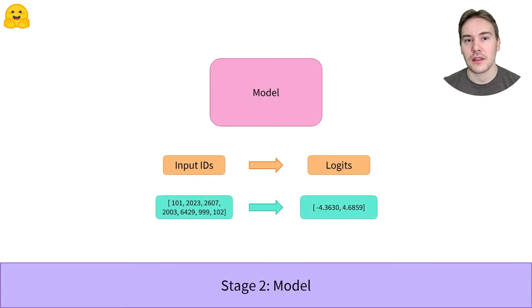Those outputs are not probabilities yet. We can see they don't sum up to 1. This is because each model of the Transformers library returns logits. To make sense of those logits, we need to dig into the third and last step of the pipeline, post-processing.